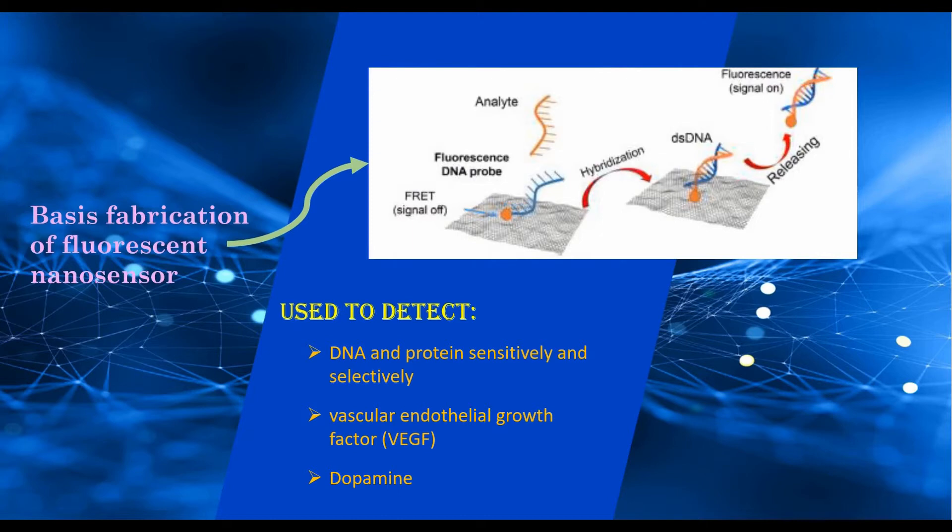The hybridization of two single-stranded DNA is the basic fabrication of fluorescence nanosensor. Firstly, it can be used to detect DNA protein sensitively and selectively. Second, to detect vascular endothelial growth factors. The last one is to detect dopamine.